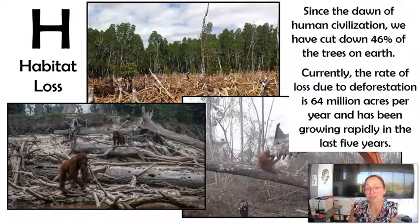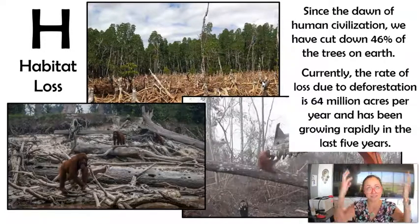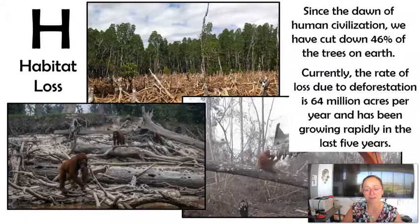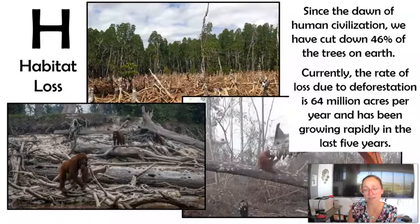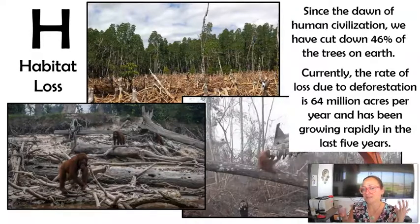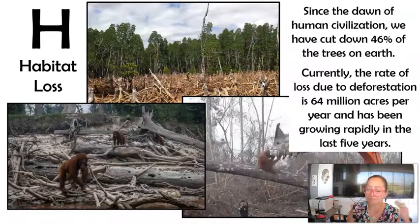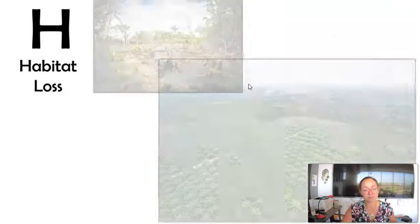Photosynthesis is one of the major ways we can take carbon dioxide out of our atmosphere. By deforestation — burning or logging our forests — we're doing the opposite. We need ways to remove CO₂ from the atmosphere, but instead we're putting more up there.